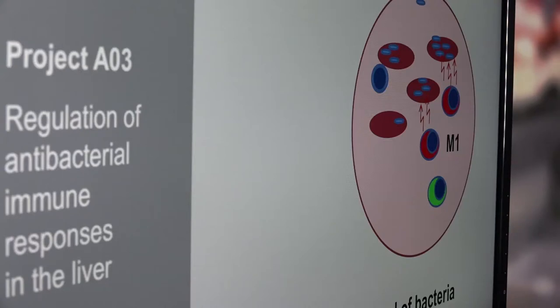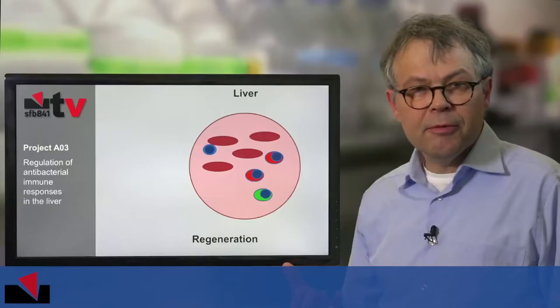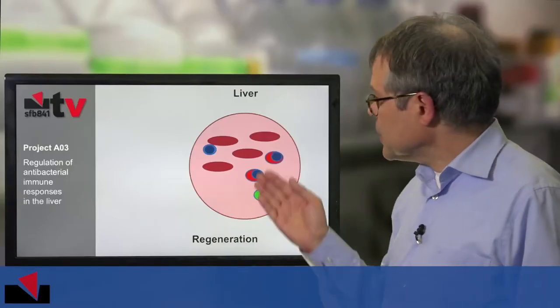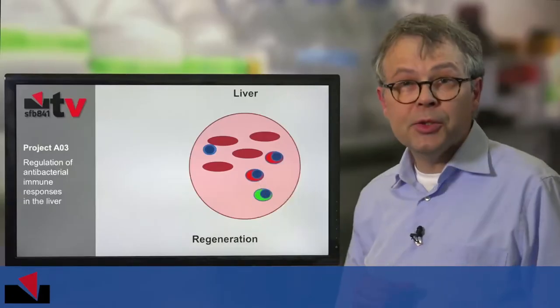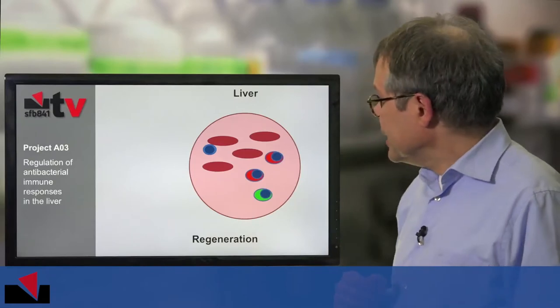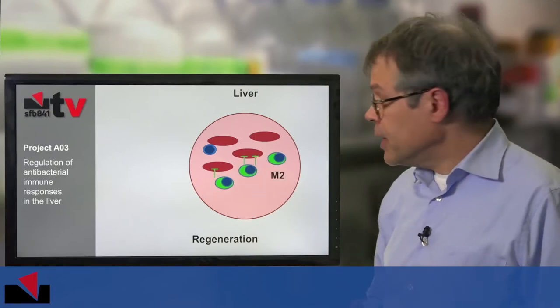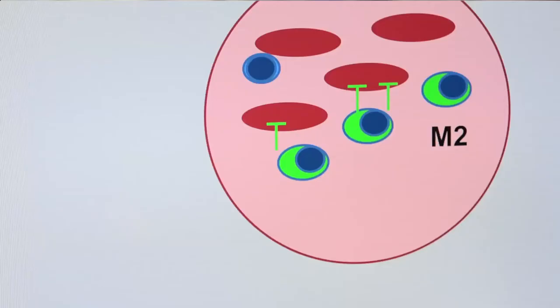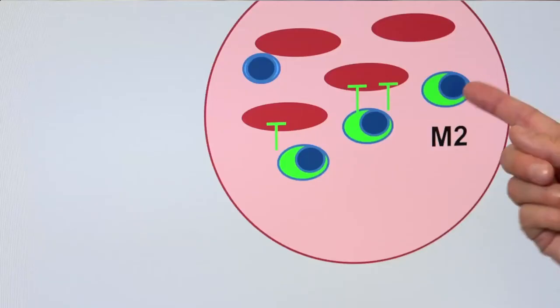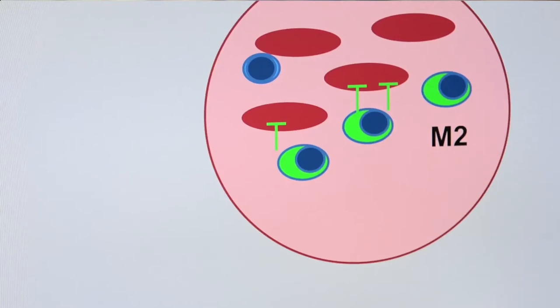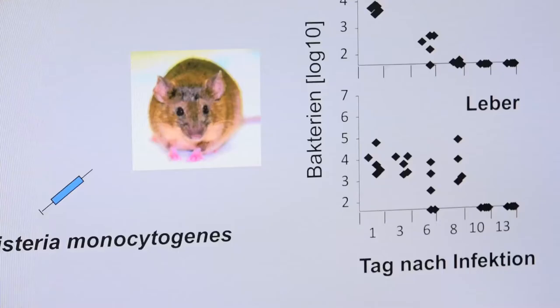Under optimal conditions, the infection is gone, but we still have tissue damage. Now a second set of macrophages gets involved — M2 macrophages — and they are specialised in removing dead cells and repairing tissue.